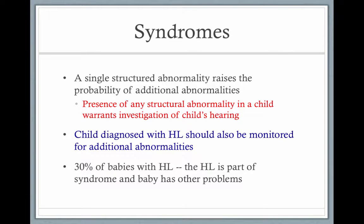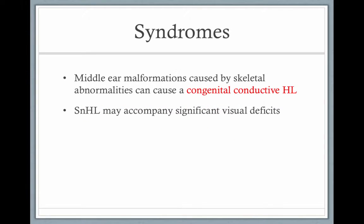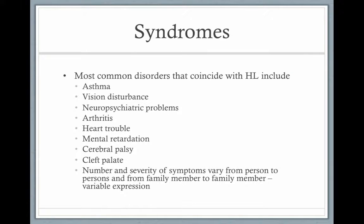With a syndrome, you have a single structured abnormality that raises the probability of additional abnormality — it's like a group of abnormalities under an umbrella term. A child diagnosed with hearing loss where there's no connected recessive gene should be monitored for additional abnormalities. Thirty percent of babies with hearing loss have hearing loss that is part of a syndrome. Middle ear malformations can cause congenital conductive hearing losses; sensorineural hearing losses often accompany visual deficits. Common disorders coinciding with hearing loss include asthma, vision problems, neuropsychiatric problems, arthritis, head trouble, mental retardation, and cerebral palsy.